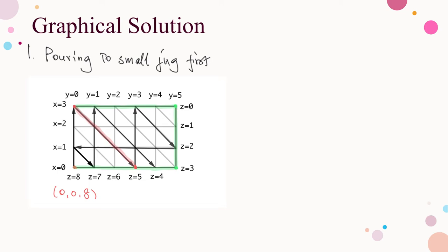Step 3: going up vertically to (0, 3, 2) — wait, for a similar reason, going vertically to (3, 3, 2). Step 4: going diagonally to (1, 5, 2). Step 5: going horizontally to (1, 0, 7). Step 6: going diagonally to (0, 1, 7). Step 7: going vertically to (3, 1, 4). Step 8: going diagonally to (0, 4, 4). Done — the water is equally divided, with 4 litres each in the middle and large jugs. To use fewer steps, corner points are avoided in each move, so there is actually one choice left at each step. Thus the target is reached systematically in 8 steps for this case.